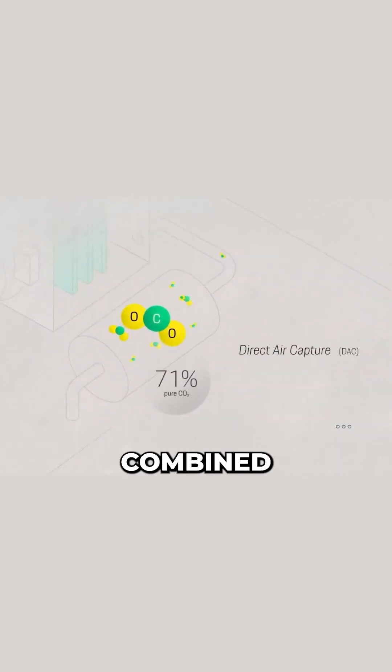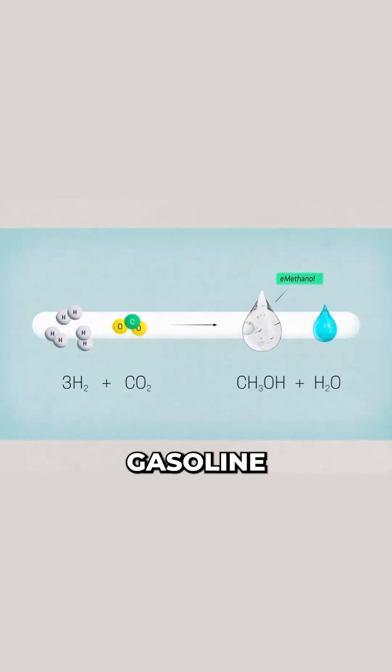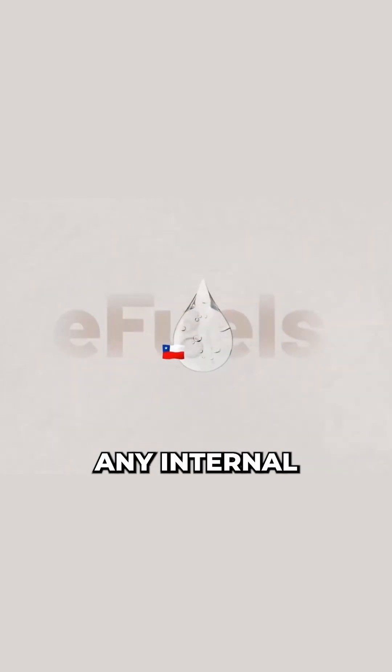That hydrogen is then combined with CO2 captured from the air to produce methanol using Exxon Mobil's methanol to gasoline process, ultimately making an e-fuel you can drop into any internal combustion engine without any modifications required.